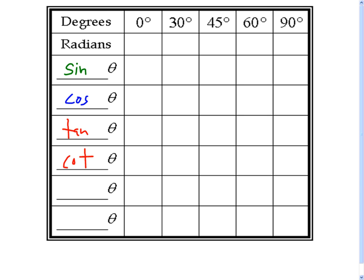Finally, secant and cosecant, the reciprocals of cosine and sine, are also co-functions. So we'll get those last of all.